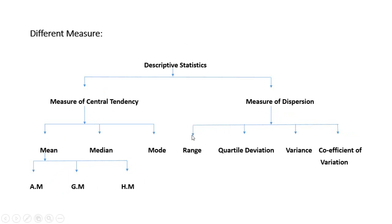Measure of dispersion can be classified in four parts: range, quartile deviation, variance, and coefficient of variation.